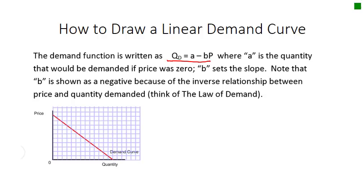We have it in the form QD = a - bp. So for example, QD = 10 - 2p. A is the quantity that would be demanded if the price were zero. So if price were zero, that term falls out of the equation, and the quantity demanded would simply equal a.